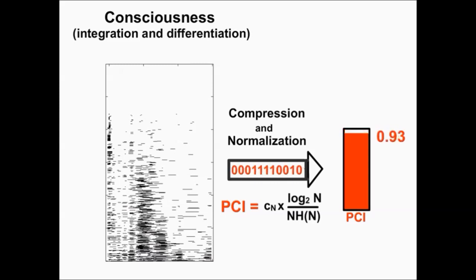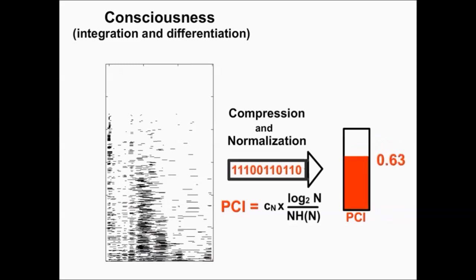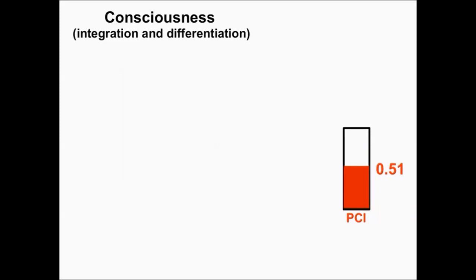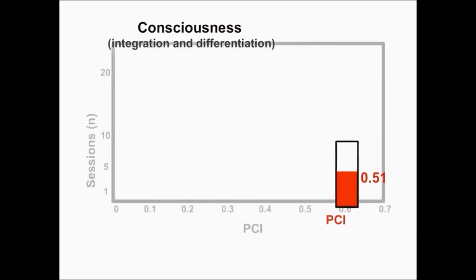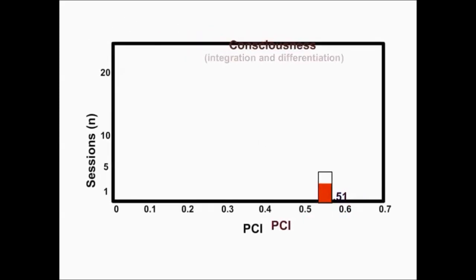A complex system made of highly interacting elements that have different properties and different connections reacts to the perturbation with a response that is widespread and differentiated, as you can see here. This response contains a lot of information and cannot be easily compressed, resulting in a high value of perturbational complexity index, PCI — here 0.51.